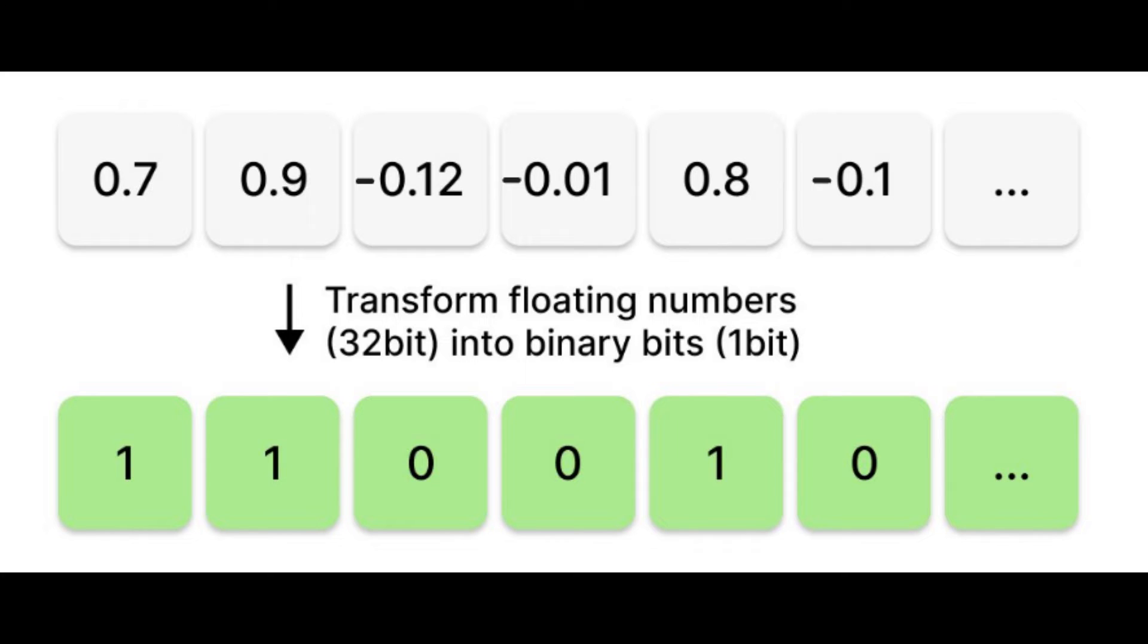Now the question is how to calculate the similarity of vectors which have been binarized. We can use the Hamming distance to efficiently perform retrieval with these binary embeddings. This is simply the number of positions at which the bits of two binary embeddings differ. The lower the Hamming distance, the closer the embeddings, and thus the more relevant the document. A huge advantage of the Hamming distance is that it can be easily calculated with two CPU cycles, allowing for blazingly fast performance.